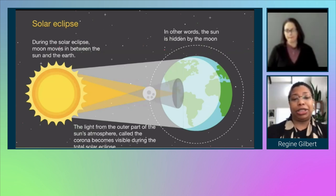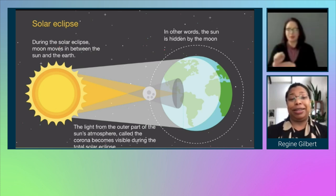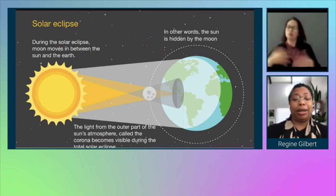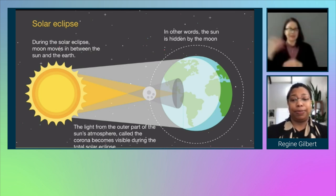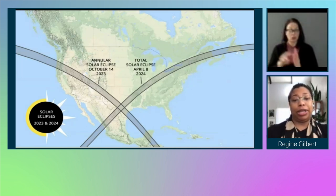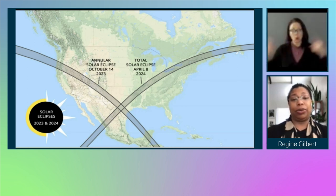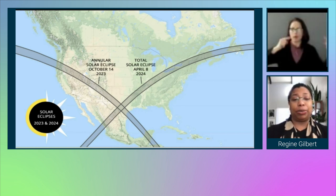I have an image of the sun, the earth, and the moon, and I'm going to go over what happens with a solar eclipse. During the solar eclipse, the moon moves between the sun and the earth, and the light from the outer part of the sun's atmosphere called the corona becomes visible during the total solar eclipse — in other words, the sun is hidden by the moon. I have an image of North America focused on the United States, with two lines crossing — one for the total solar eclipse happening April 8, 2024, and the other for the annular solar eclipse happening October 14, 2023. The lines cross in the deep heart of Texas, which is where I'm actually sitting right now.